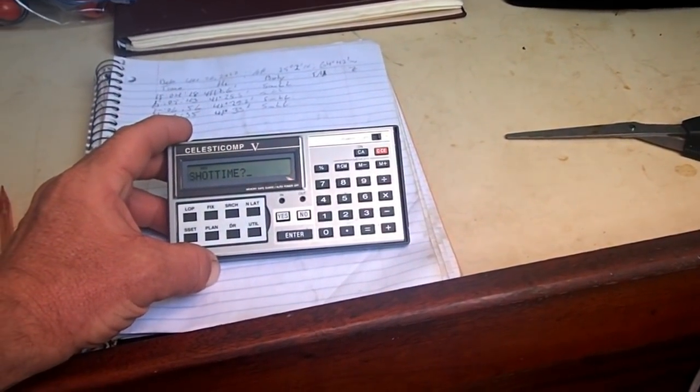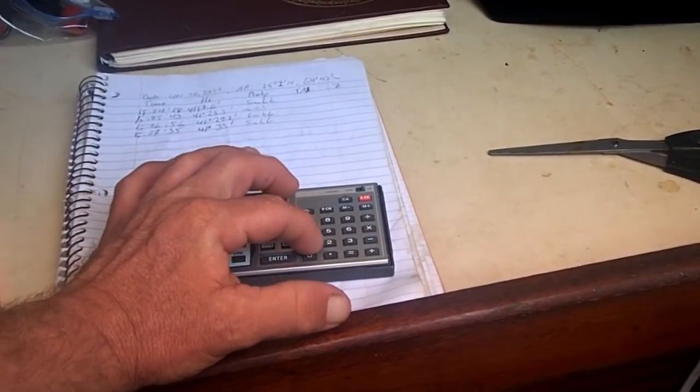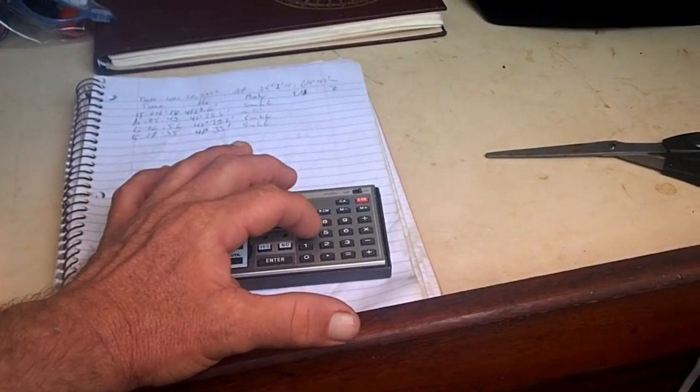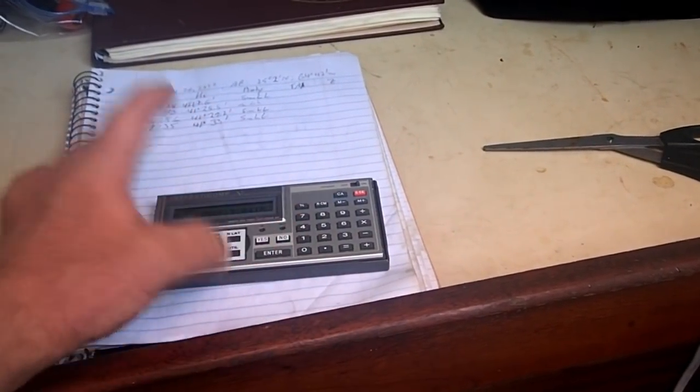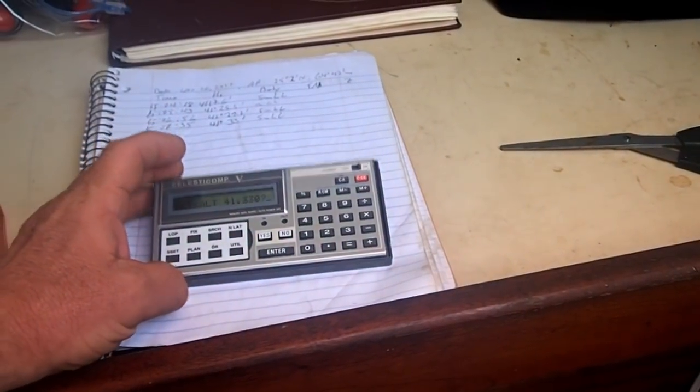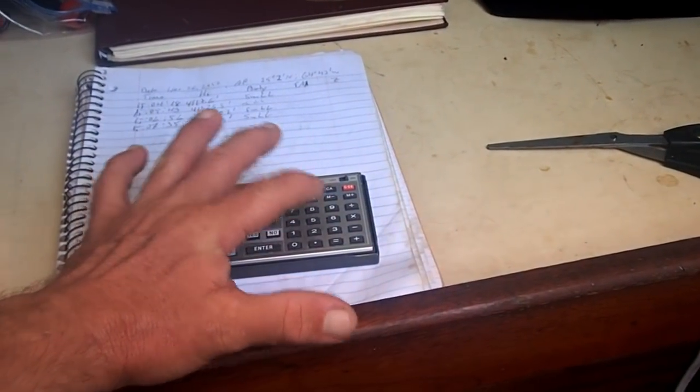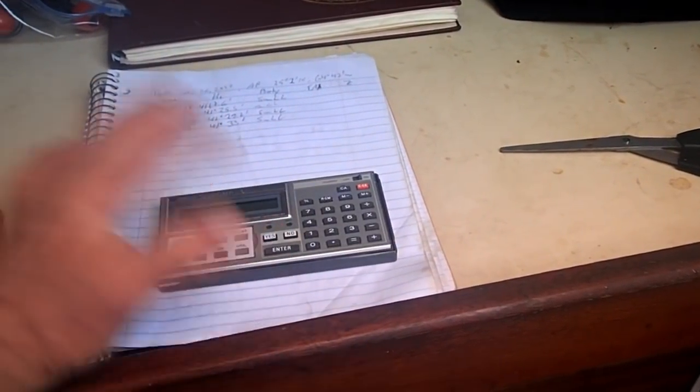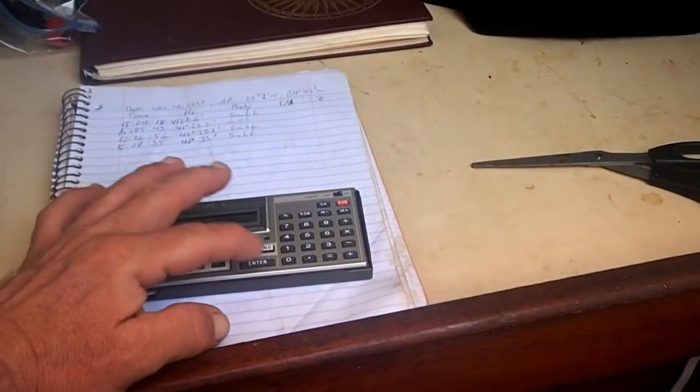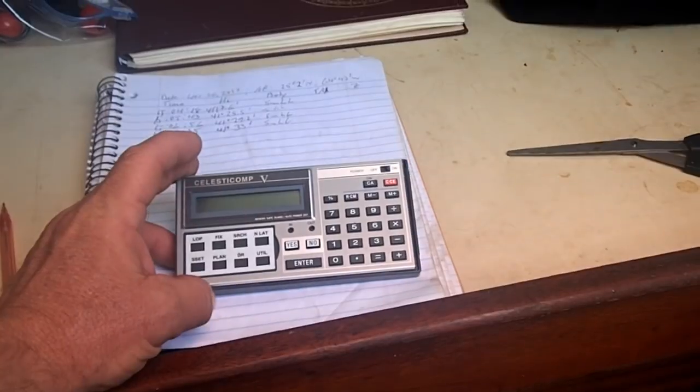So, then it'll prompt you shot time. So, let's enter in the time of our first observation, which is 15 hours, 4 minutes, 18 seconds. Okay? And the sextant altitude was 41 degrees, 17.6 minutes. And body zero is the lower limb of the sun. And there's a little card on the back that gives you the codes there.